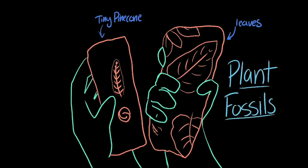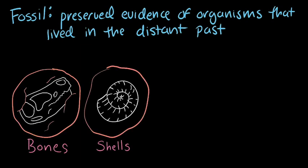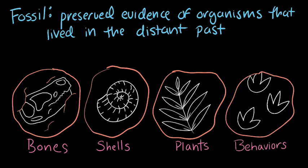But what exactly are fossils and what can they tell us? Fossils are preserved evidence of organisms that lived in the distant past. They can be made up of many different things, like bones, shells, plants, or even markings like footprints that tell us about an organism's behaviors.